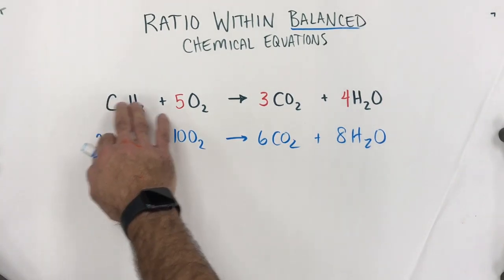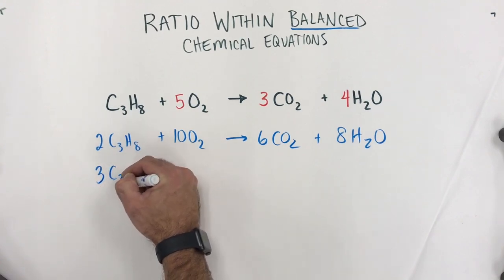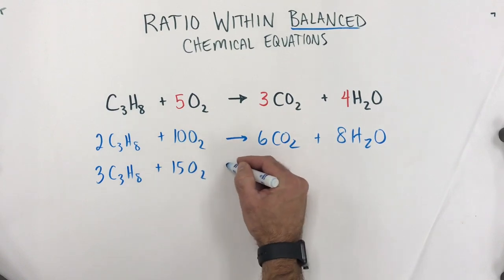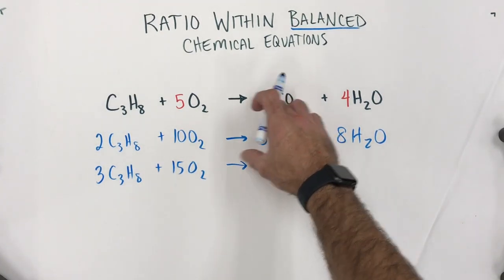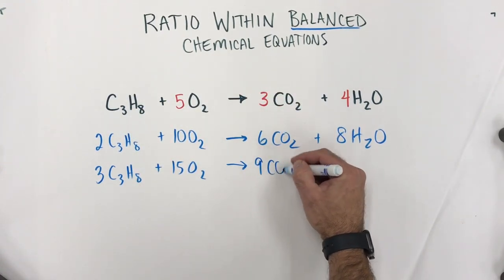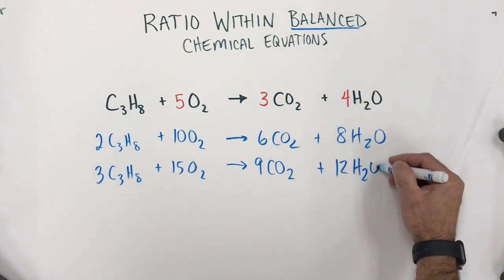So, since we had twice as much propane and twice as much oxygen, we get twice as much carbon dioxide and twice as much water. If we keep that same logic, we could say, well, what if we tripled the recipe? Instead of one propane and five oxygens, what if we had three propane and 15 oxygen? Well, it's that simple. It's just triple the recipe. So, triple these means triple this. Three times three, we would make nine carbon dioxide and 12 water.